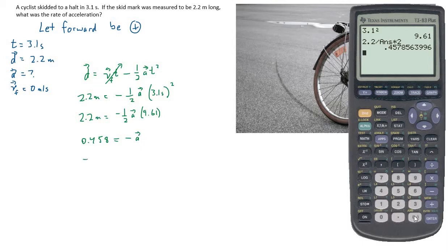Well, if we get rid of the negative, it ends up being negative 0.458 is equal to the acceleration. And now we see the significance of choosing a direction. We let forward be positive, and there was negative acceleration. So that's what tells us that the cyclist was slowing down, which makes sense. We should be rounding this to two significant digits, so let's make that negative 0.46 meters per second squared.